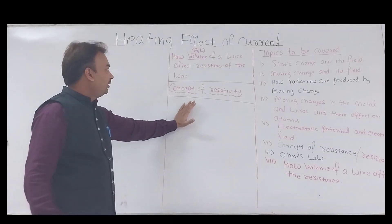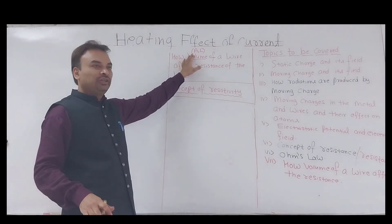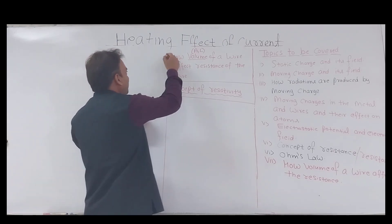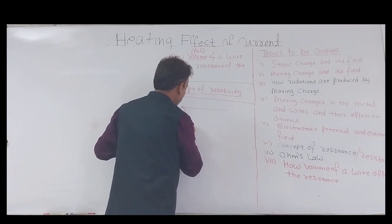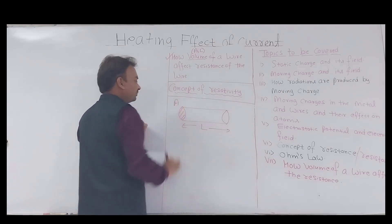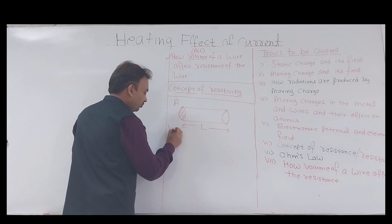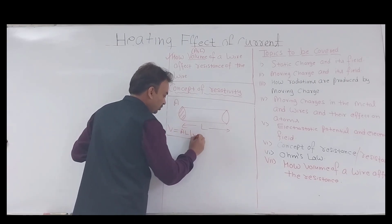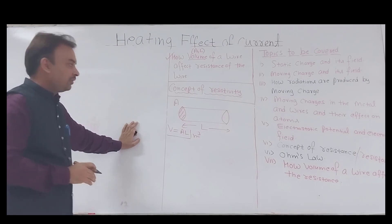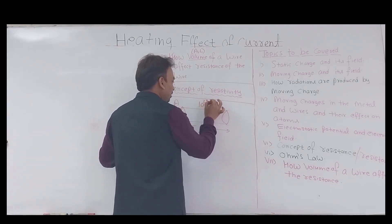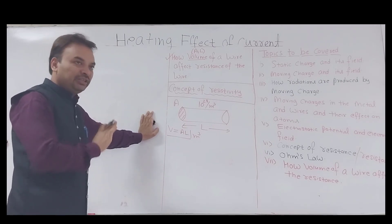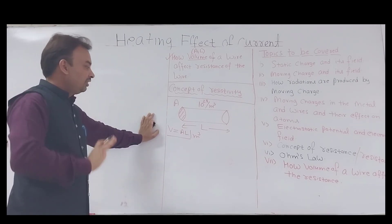Next we look at how the volume of a wire affects its resistance — volume meaning the area and length of the wire — and the concept of resistivity. Consider a wire of length L and cross-sectional area A. The volume of this wire is area multiplied by length, in cubic meters. Assume this is a copper wire having 10 to the power 28 free electrons per cubic meter, doing inelastic collisions and heating up the wire.